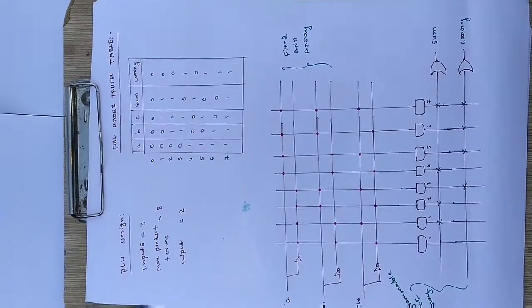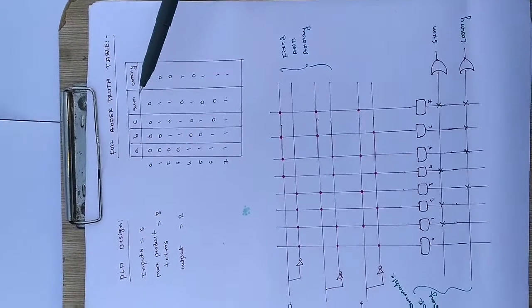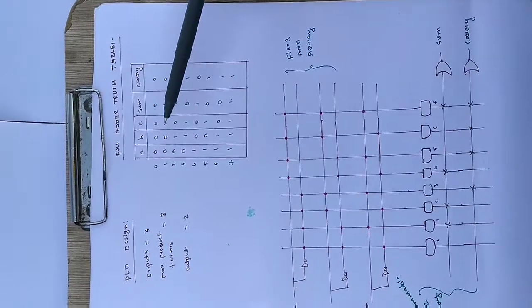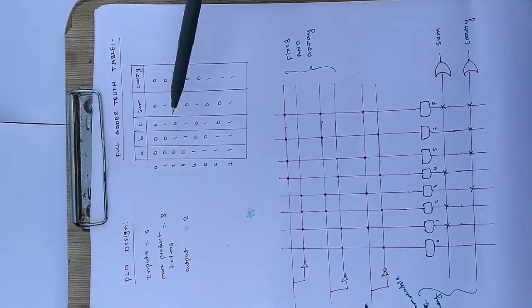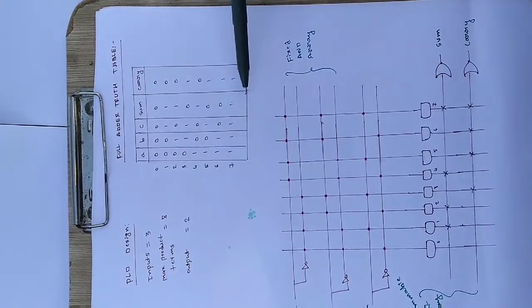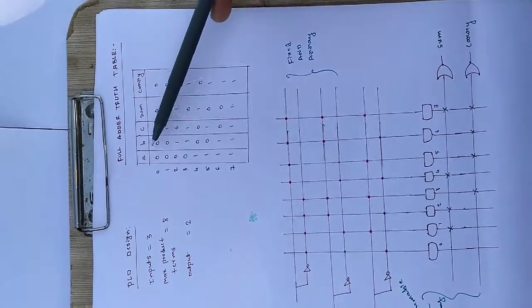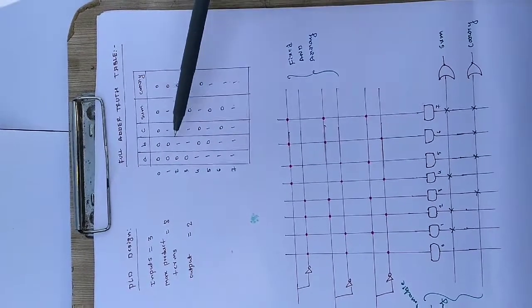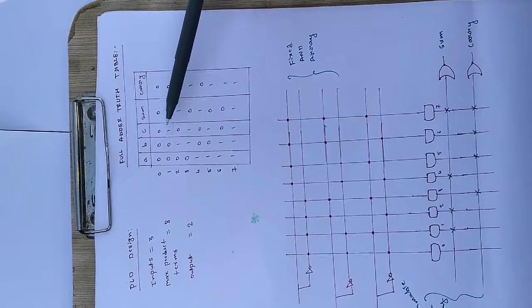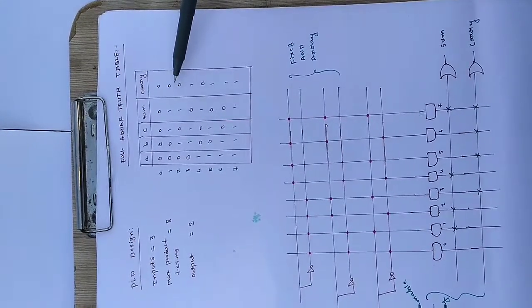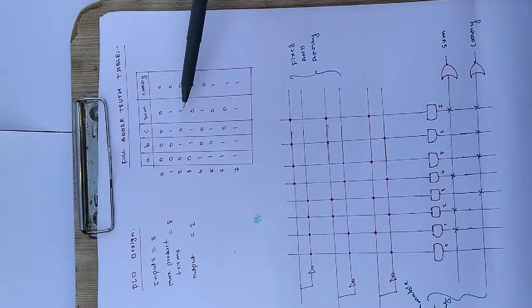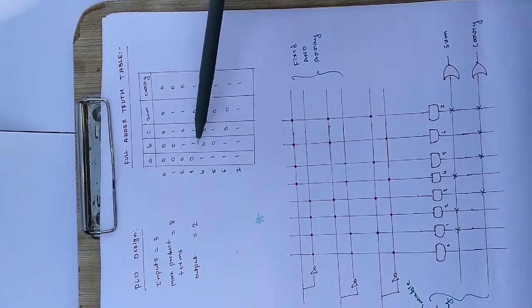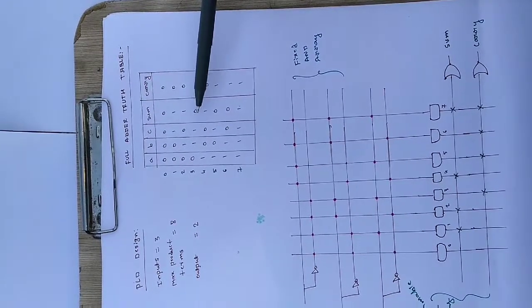The truth table has A, B, C as inputs and Sum, Carry as outputs, with eight combinations from 000 to 111. When A=0, B=0, C=0: Sum=0, Carry=0. When A=0, B=0, C=1: Sum=1, Carry=0. When A=0, B=1, C=0: Sum=1, Carry=0. When the input contains two 1s, Sum=0 because a carry is generated, so for A=0, B=1, C=1: Sum=0, Carry=1.